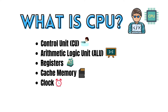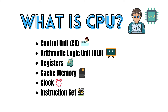Let's learn what the instruction set is used for in the CPU. The instruction set is a collection of commands or operations that the CPU can execute. Different CPUs have different instruction sets, and they are designed to understand and execute specific types of instructions. The CPU interacts with other components of a computer, such as memory, storage, and input-output devices, to carry out the tasks required by software applications.